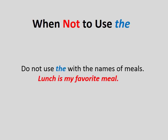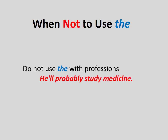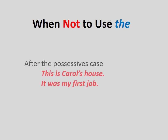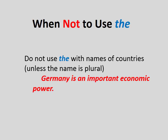Do not use 'the' with the names of meals — 'Lunch is my favorite meal.' Do not use 'the' with professions — 'He'll probably study medicine.' Do not use 'the' with the names of languages — 'French is spoken in Tahiti.' Do not use 'the' after the possessive case — 'This is Carol's house' or 'It was my first job.' Do not use 'the' with names of countries, unless the name is plural — 'Germany is an important economic power.'